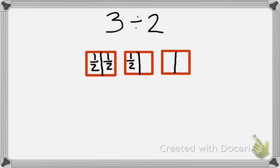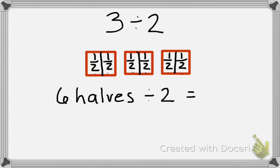I want you to start to think about how many halves are there within three crackers. Let's count. One, two, three, four, five, six. I have six halves that I'm going to divide amongst two people. Six divided by two equals three halves.